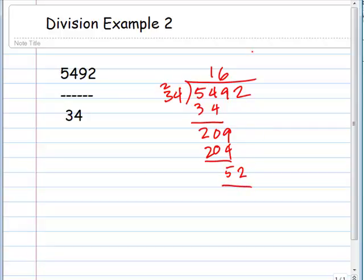And then it looks like that's just 1. 34 is going to go into 52 one time.